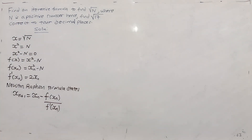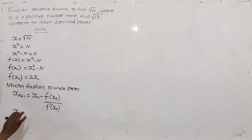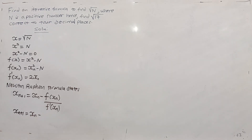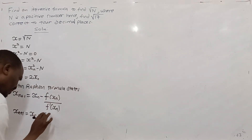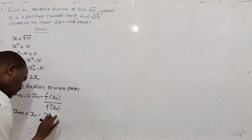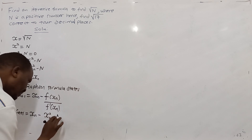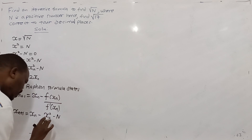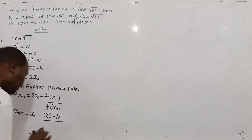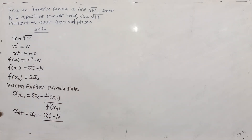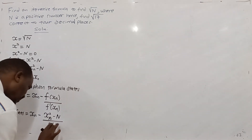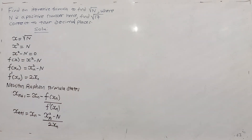It is now substituted in the formula. We have x_{n+1} is equal to x_n minus — what is the function of x_n? It is x_n squared — this is small n — minus capital N, all over that derivative which is 2x_n.